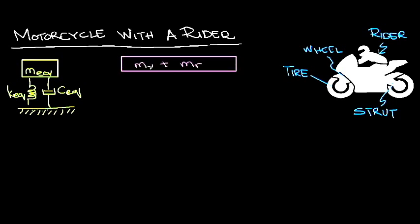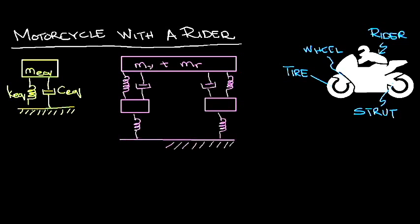Now the model can be further refined by representing the masses of the wheels, elasticity of the tires, elasticity and damping of the struts separately. The mass of the rider and the mass of the vehicle's body are shown as a single mass here.